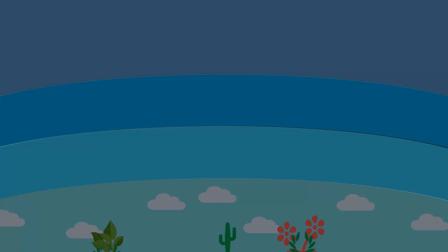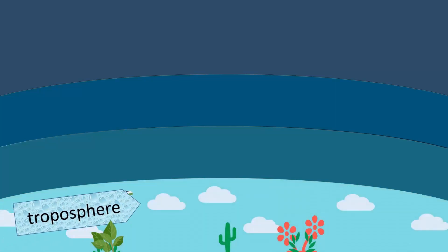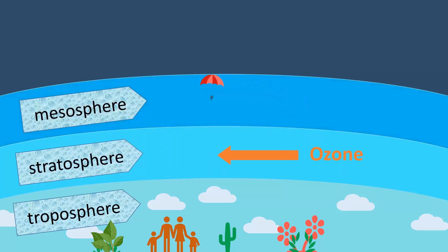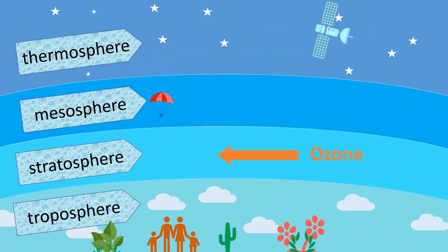There are four layers of an atmosphere. Troposphere is the first layer of the atmosphere. This is where you and I exist. Most life exists in this layer because this layer has air. The other layers are the stratosphere, mesosphere and thermosphere.